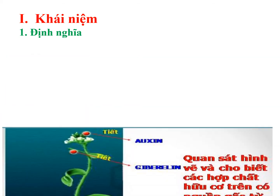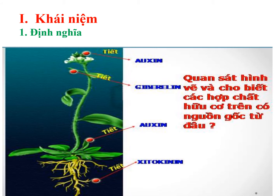Tiếp tục các em quan sát hình ảnh thứ 2. Các loại hốc môn ở thực vật do chính cơ thể thực vật tiết ra. Vậy thì những bộ phận nào trong cây tiết ra những loại hốc môn này? Qua hình ảnh các em thấy rằng auxin được sản sinh ra ở thân hay cành; gibberellin được sản sinh ra ở lá hay rễ; hoặc cytokinin được sản sinh ra trong các tế bào đang phân chia như rễ non, lá non hay quả còn non. Trên cơ sở này, hốc môn thực vật chính là các chất hữu cơ do chính cơ thể thực vật tiết ra.